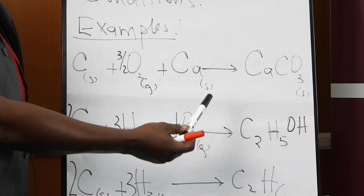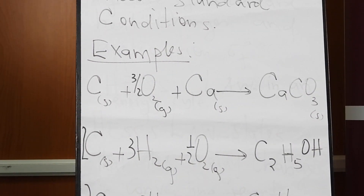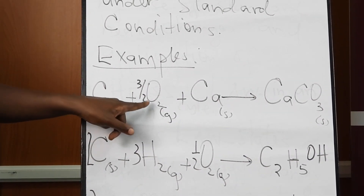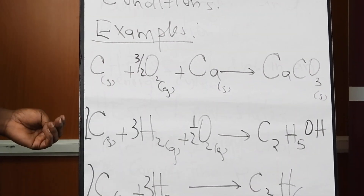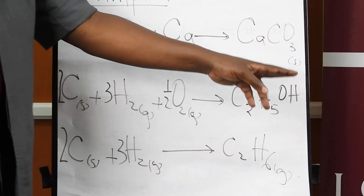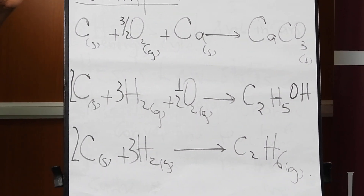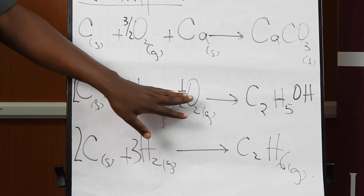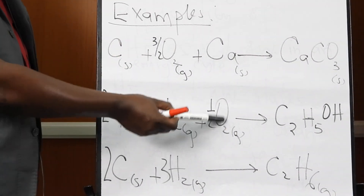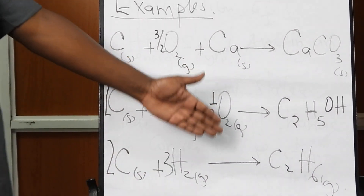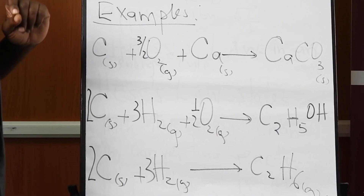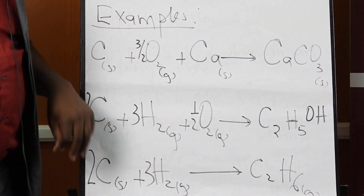Similarly, for ethane, these are examples of what we mean by formation — you assume that to form something, you take the elements present and combine them directly to get the product. Because we cannot carry out these formation experiments in the lab, one wonders: how can you determine, for example, the heat of formation of ethanol when you cannot carry out the reaction experimentally?